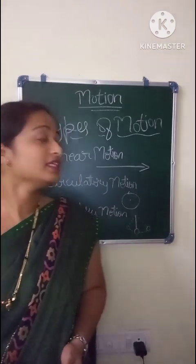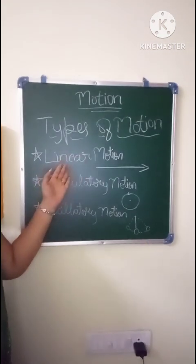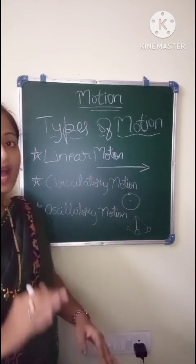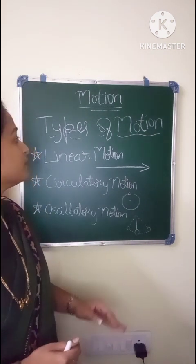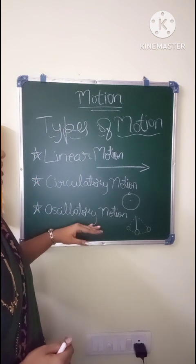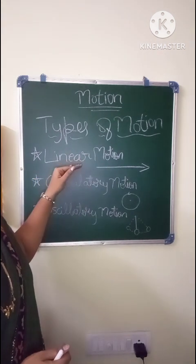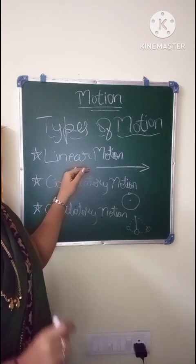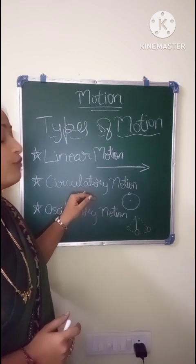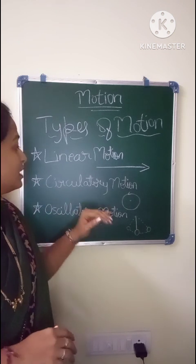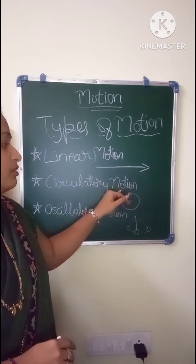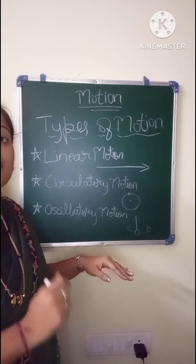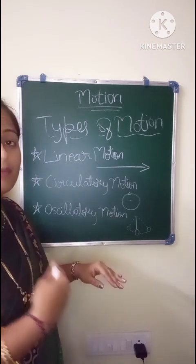Now let us see the types of motion. The first one is linear motion, the second is circulatory motion, and the third is oscillatory motion. Depending on the paths that the object follows, we divide motion into these three types. Linear motion is when the object travels in a straight line. When the object follows a circular path, it is called circulatory motion. Oscillatory motion is the to-and-fro motion of an object — the object moves backward and forward.